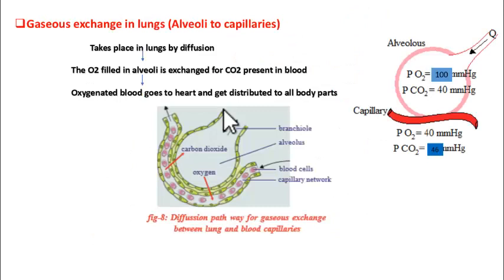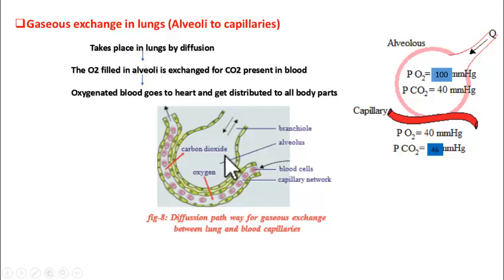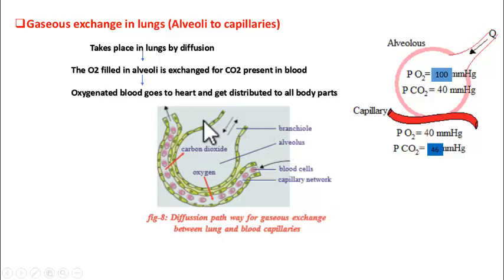Gaseous exchange means exchange of gases — oxygen is exchanged for carbon dioxide — and this happens in the lungs. Inside the lungs, there are sac-like structures. Per lung, 600 million such sacs are present, and these are called alveoli (plural) or alveolus (singular). This is one alveolus of the lung, and alveoli are surrounded by blood capillaries. One capillary is shown here, but many capillaries are present around it.